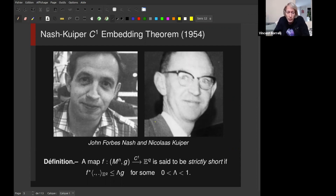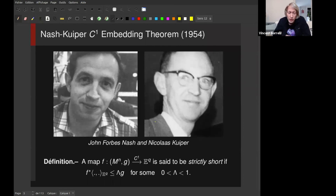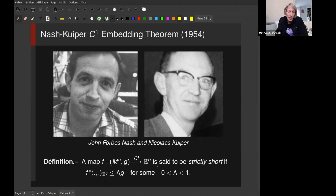Nash realized that our intuition is wrong if we reduce the regularity to be less than C2. That's the celebrated Nash C1 embedding theorem. To state this theorem I need to introduce what a strictly short map is. A strictly short map between two Riemannian manifolds is a map which strictly shortens distances; at the differential level, that means the pullback of your inner product is less than your metric times a scalar factor which is less than one.